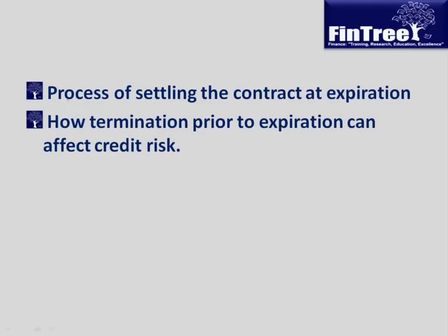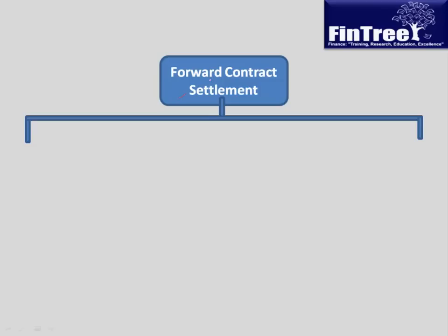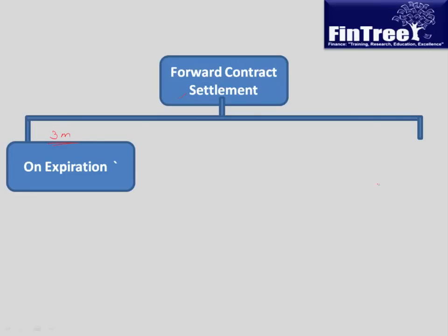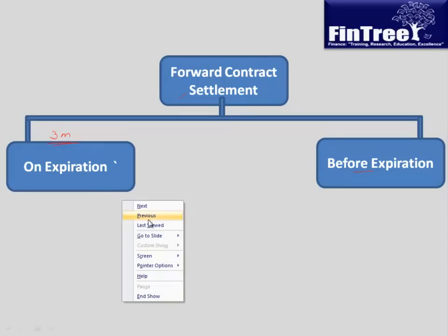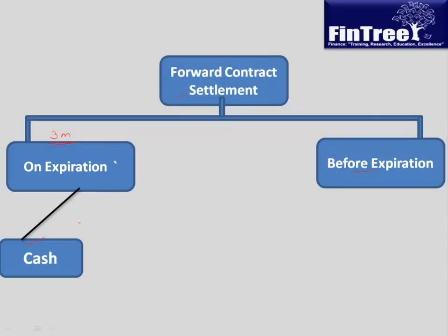The next important topic is the process of settling the contract at expiration and how termination prior to expiration can affect credit risk. We will use a flowchart. A forward contract can be settled on expiration — in our example after 3 months — or before expiration. On expiration there are two possible ways: cash settlement or delivery. In cash settlement, if long is benefited, short pays that excess benefit to long and the contract is closed. In delivery, the long buys and the short delivers per the contract terms.